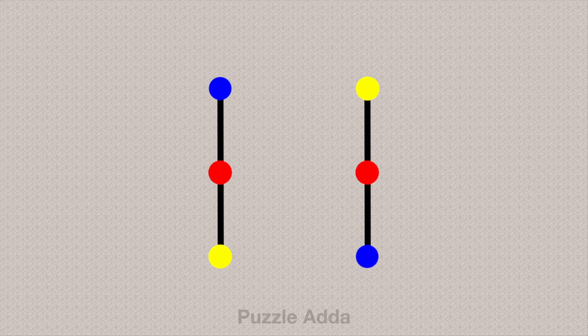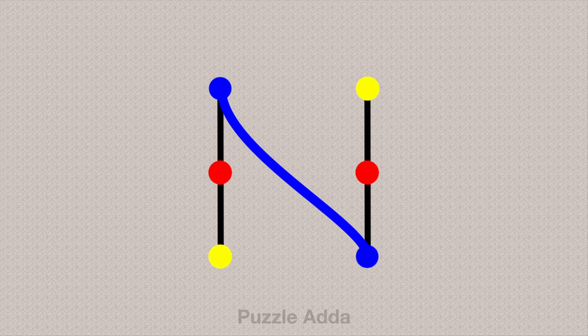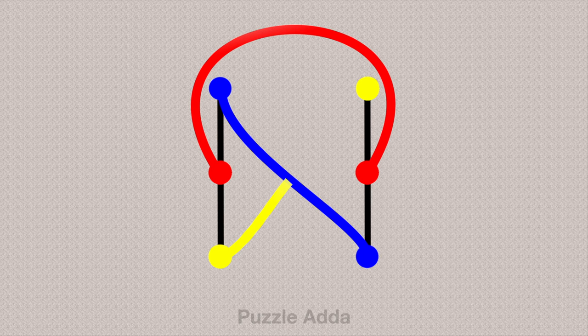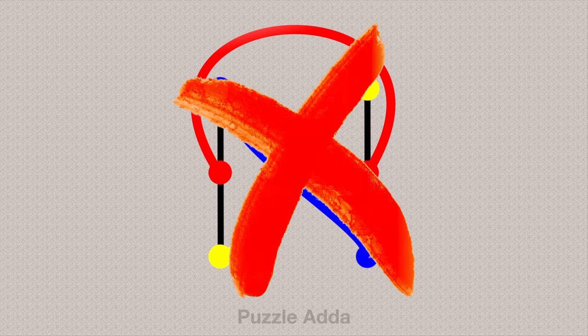So let's try. First, if we connect blue dot with the blue dot and red with the red dot like this. And now, if we try to connect yellow dot with the yellow, we can't do it. The lines will intersect. This is not the right answer.